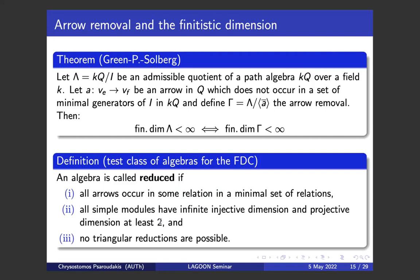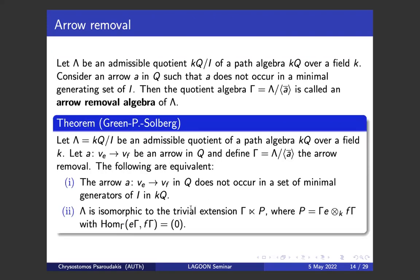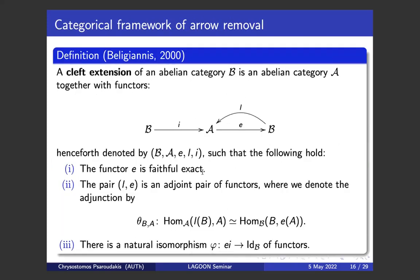With these two techniques — vertex removal and arrow removal — we are able to remove the part of the quiver that doesn't play any role with respect to the finitistic dimension: the vertices where the corresponding simples have finite exact dimension, the vertices where the corresponding simples have projective dimension one, and all arrows that are not part of any relation. One comment is that we don't have a reduction for simples of projective dimension two — this is very annoying and there is not really much progress. Now I want to focus on the arrow removal and see the categorical background: what is behind this operation.